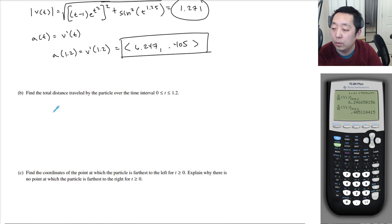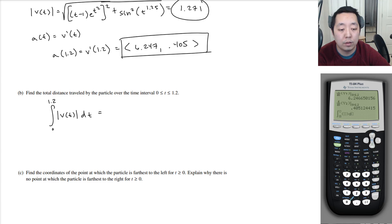Find the total distance traveled by the particle over the time 0 to 1.2. So here we're going to integrate from 0 to 1.2 the absolute value, or the speed, of the vector. So we're basically going to do exactly what we did before. We're going to integral from 0 to 1.2 of the square root of y1 squared plus y2 squared, the x component squared plus the y component squared. And I get 1.010 to 3 decimal points.